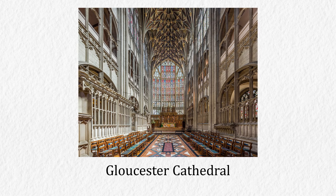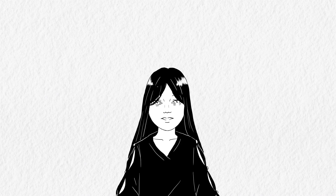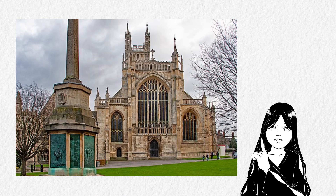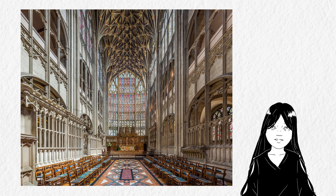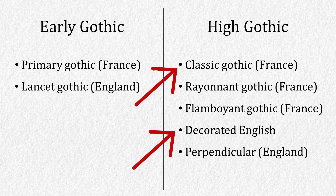From the examples listed in each era, you may have noticed that it is not uncommon for some buildings to fall into more than one categorisation. For example, Gloucester Cathedral was built in Decorated English, but its choir was later built in the Perpendicular style. In a more general sense, Gothic architecture can be divided into two main stages: Early Gothic and High Gothic. The High Gothic counts from Classic Gothic onwards for France and Decorated English onwards for England.